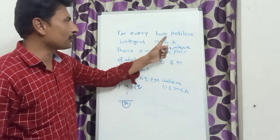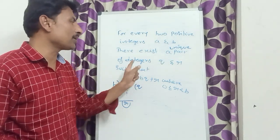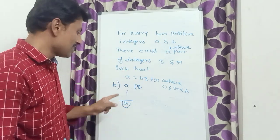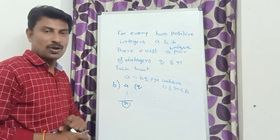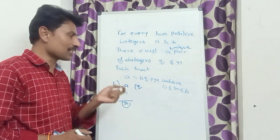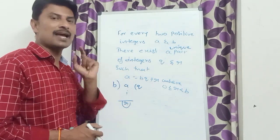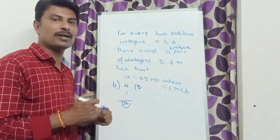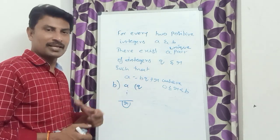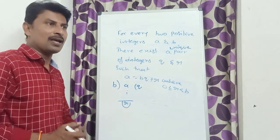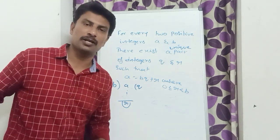For every two positive integers A and B, there exists a unique pair of integers Q and R such that they satisfy the relation A is equal to BQ plus R. Lemma is nothing but a step-by-step explanation of the algorithm.